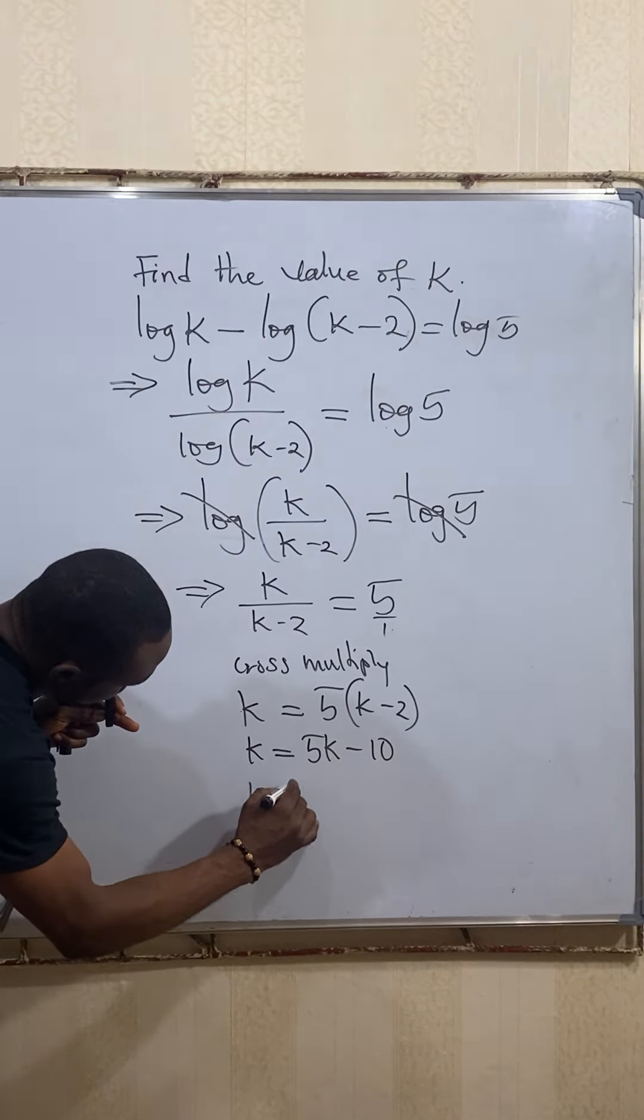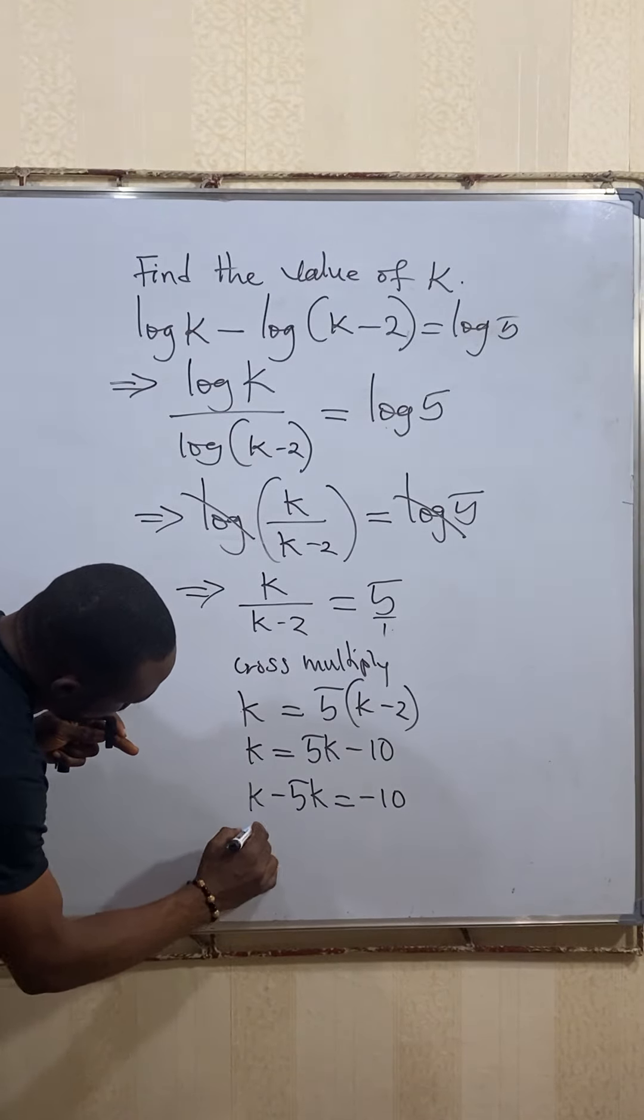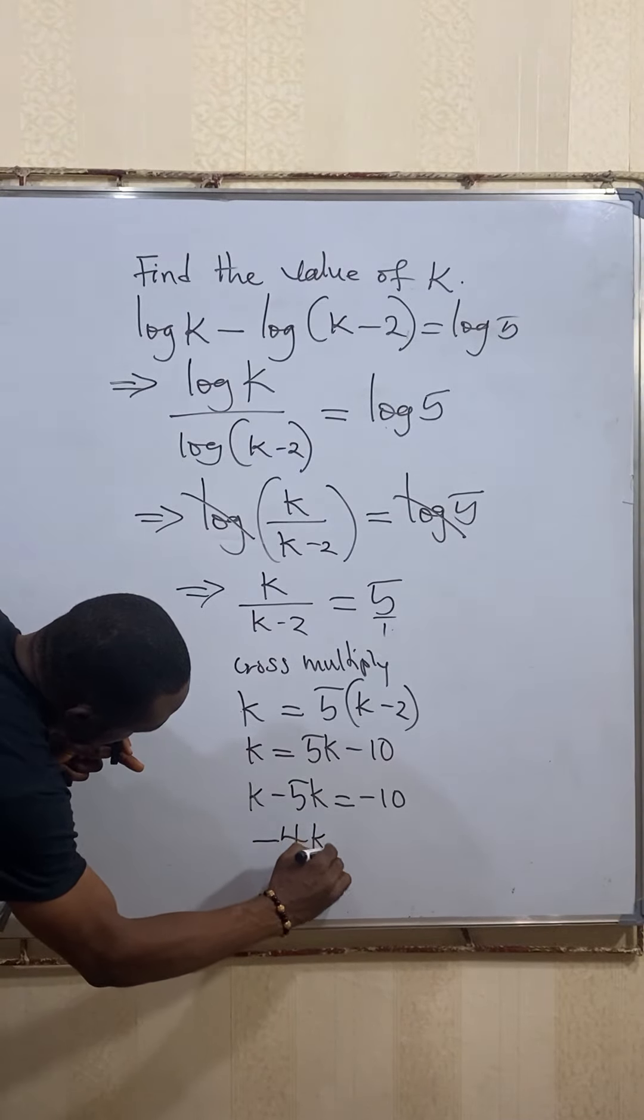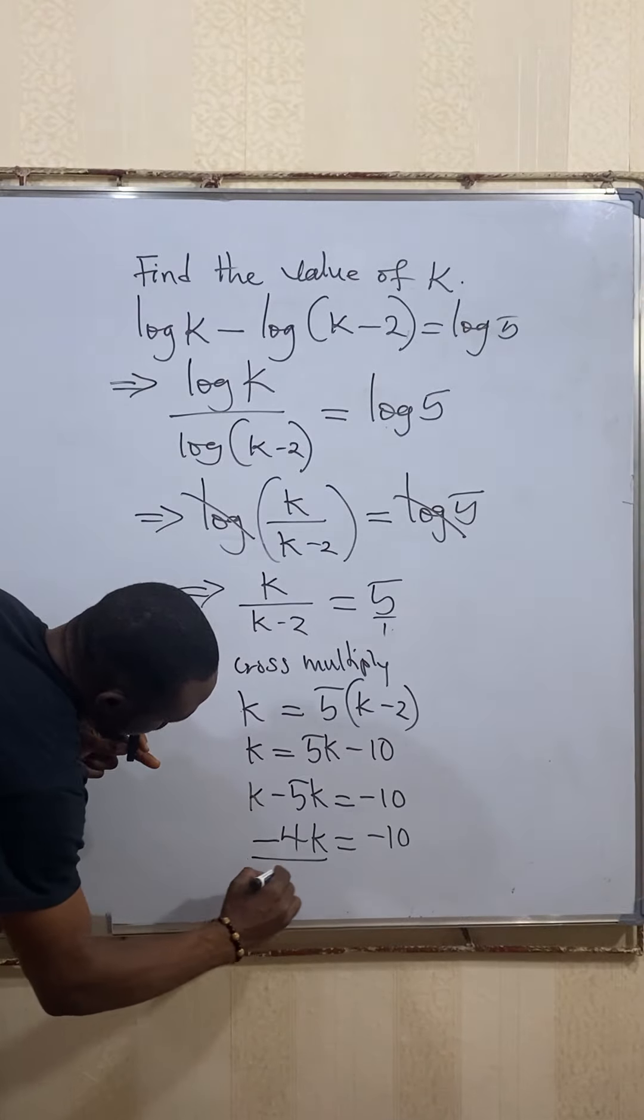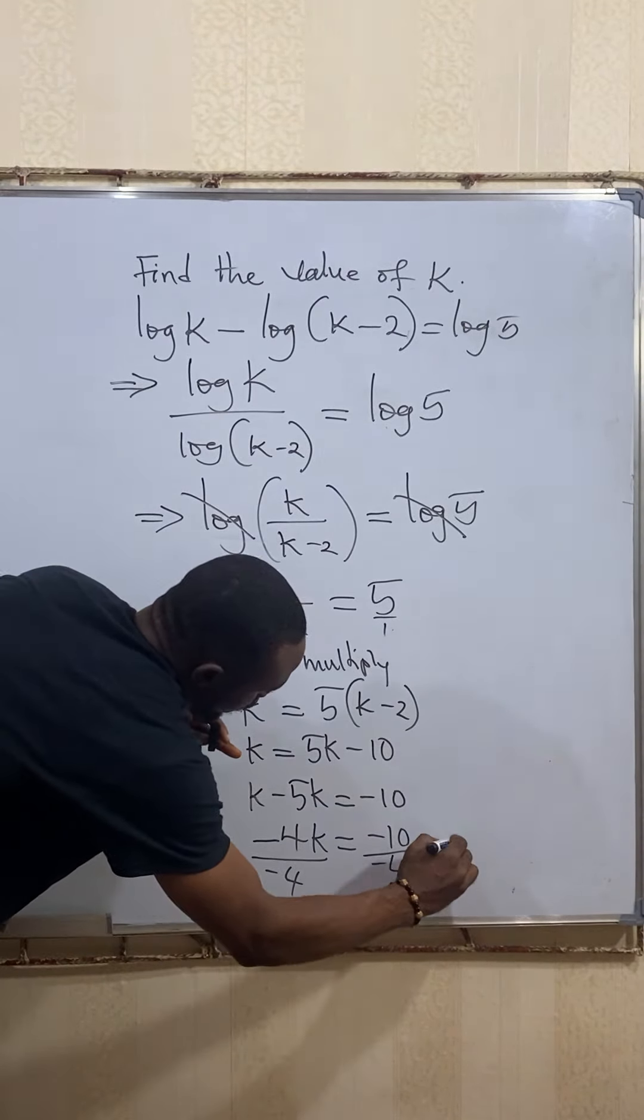If you subtract now, you have minus 4k to be equal to minus 10. Divide both sides by minus 4, divide both sides by minus 4.